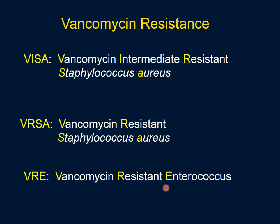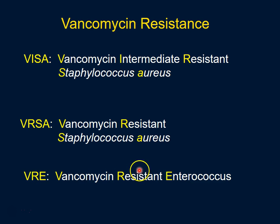Vancomycin resistance has become a significant issue. There are three types of resistant strains to discuss. First, VISA — vancomycin-intermediate-resistant Staphylococcus aureus — where the bacteria require higher-than-normal concentrations of vancomycin. Second, VRSA — vancomycin-resistant Staphylococcus aureus — which is completely resistant. Third, VRE — vancomycin-resistant enterococci — a very similar resistance occurring in enterococci.